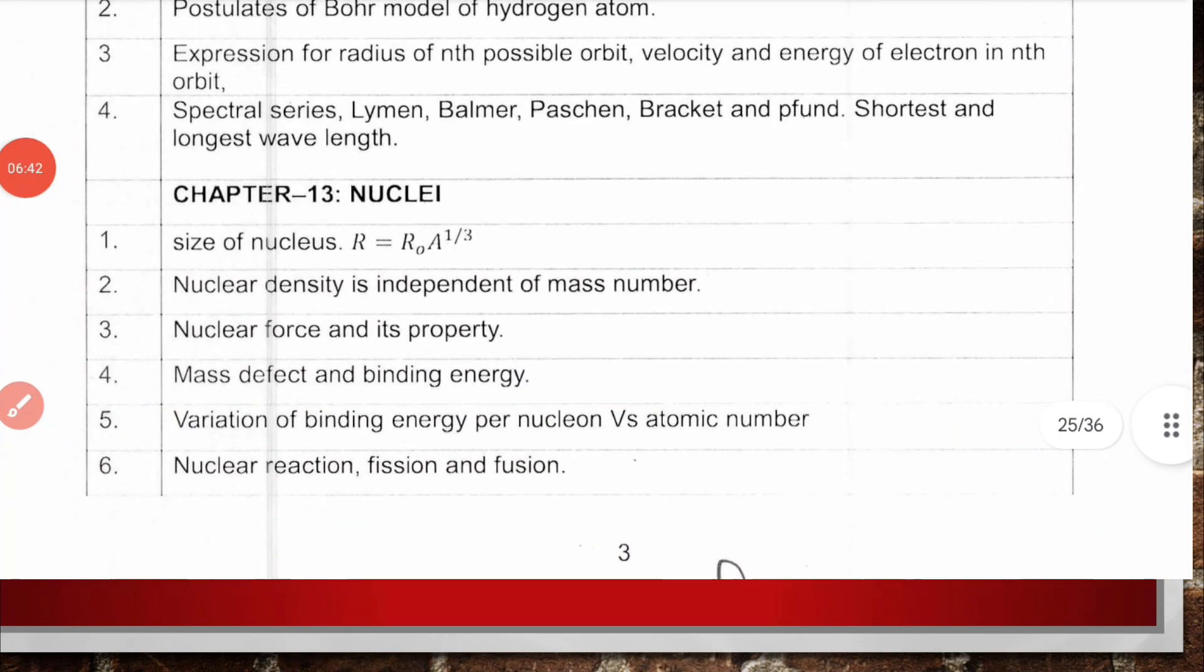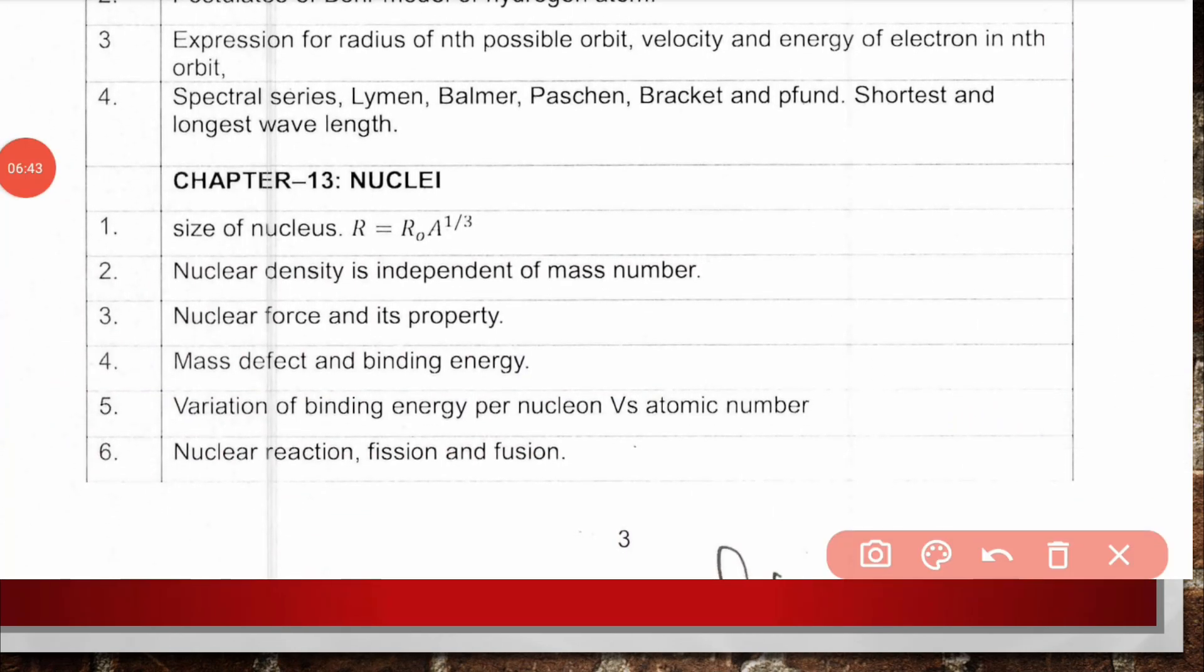Chapter 13, Nuclei: size of nuclei with possible MCQs and numericals, nuclear density being independent of mass number, nuclear force properties, mass defect and binding energy, variation of binding energy per nucleon versus atomic number, and nuclear reactions including fission and fusion with very less chance of being asked.